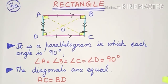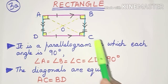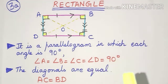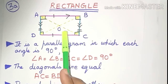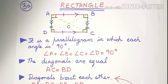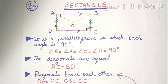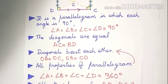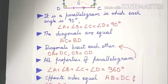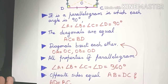The first type of parallelogram is a rectangle. A rectangle is that parallelogram in which each angle is equal to 90 degrees, so all four angles are 90 degrees. The diagonals are equal: AC is equal to DB. The diagonals also bisect each other, which is inherited from the parallelogram. All angles when added give 360 degrees and since it's a parallelogram the opposite sides are also equal.